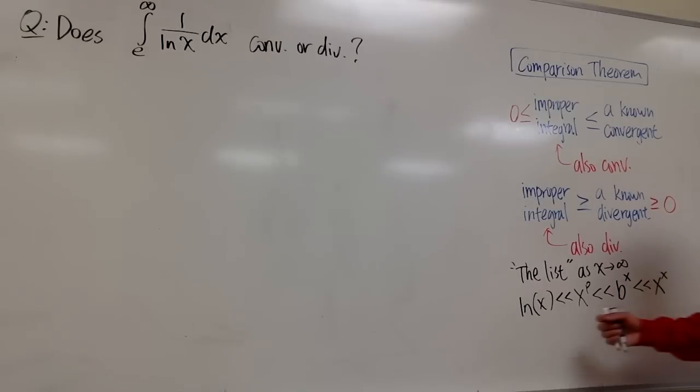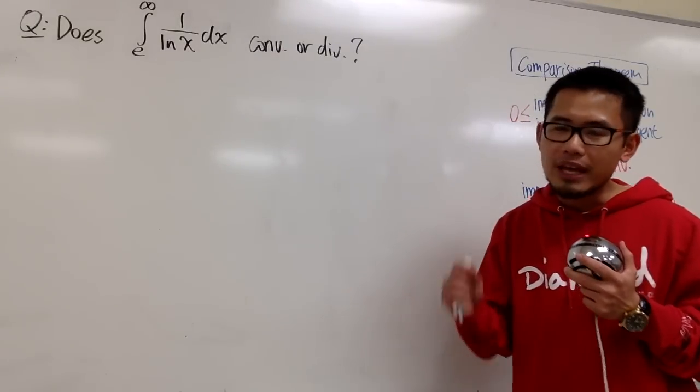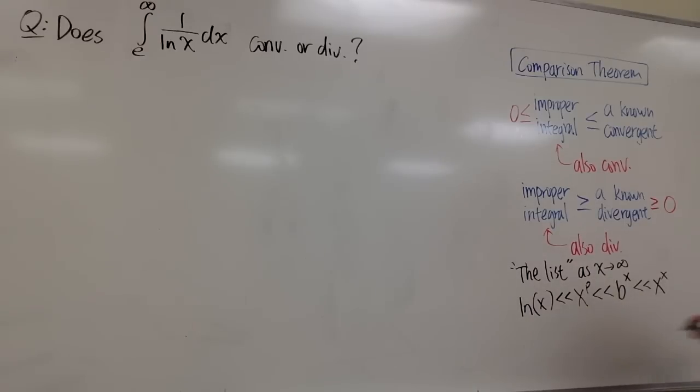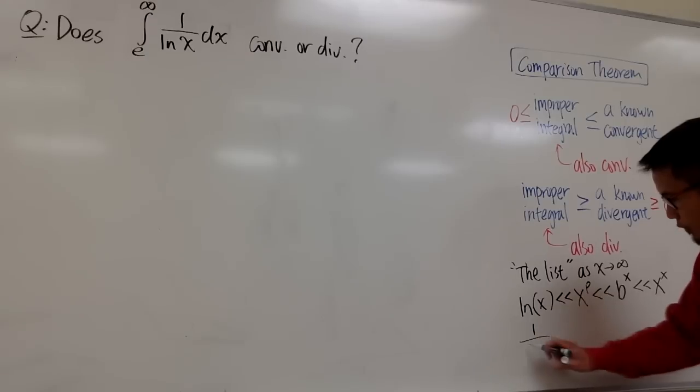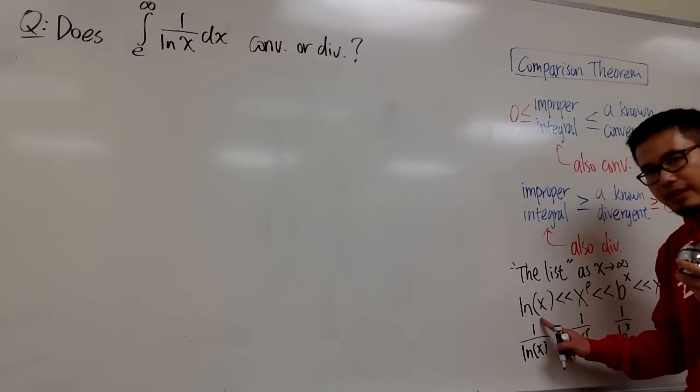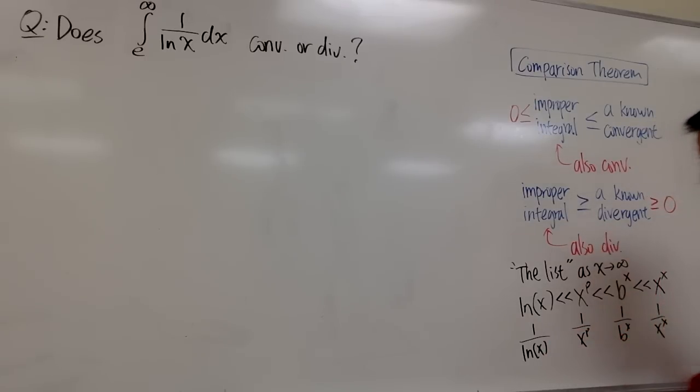There's another version for that. I will take this right here, and I'll do the reciprocal of this. In another word, if I do the reciprocal, I will have 1 over ln(x). And here, we'll have 1 over x to the p. And here, I will have 1 over b to the x. And here, I have 1 over x to the x. As you can see, ln(x) was the smallest earlier, but once I take the reciprocal of this, this in fact becomes the biggest. So I will have to switch the inequality sign. So this will be greater than, greater than that, greater than this, and then so on.